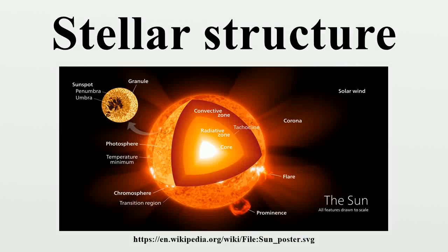Stars of different mass and age have varying internal structures. Stellar structural models describe the internal structure of a star in detail and make detailed predictions about the luminosity, the color, and the future evolution of the star. Different layers of the star transport heat upward and outwards in different ways, primarily convection and radiative transfer.